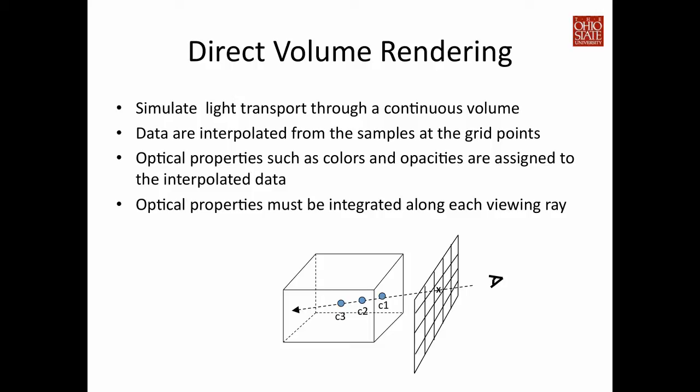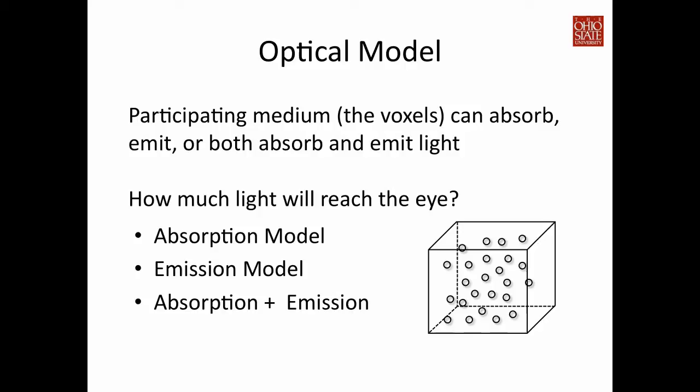Clearly the most important part of volume rendering is to determine how light reaches the image plane. We assume that the data — that is the voxel — has contribution to the participating medium. You can imagine the mediums are particles. Each of the particles can absorb, emit, or both absorb and emit light. We can use different optical models. For example, we can assume the particle only absorbs light. But to allow us to look at the value of the data, we probably need to allow the particle to emit light based on the data value. The most common method used by volume rendering is to assume the particle can both absorb and emit light.